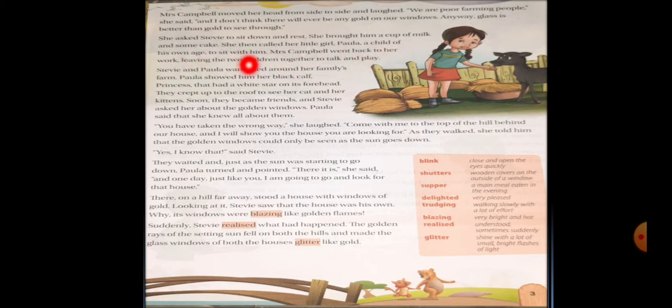She then called her little girl Paula, a child of his own age, to sit with him. Mrs. Campbell went back to her work leaving the two children together to talk and play. Now Mrs. Campbell called her daughter Paula. She was his own age. Now they both were sitting together and talking and playing. Mrs. Campbell went to work on her farm.